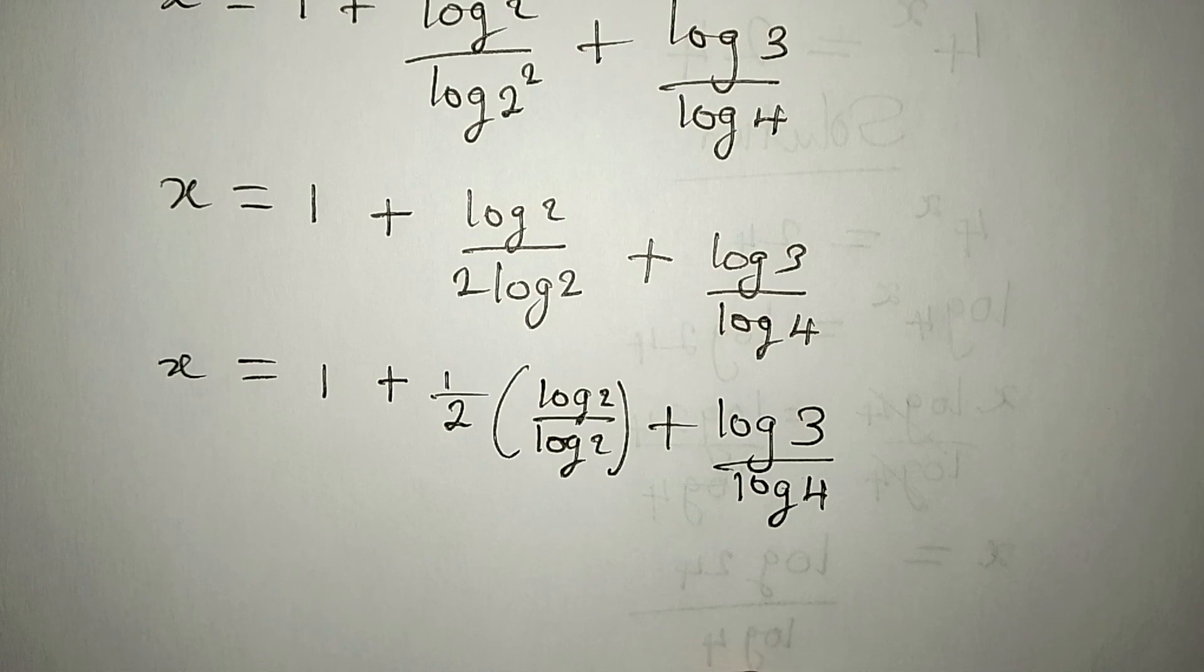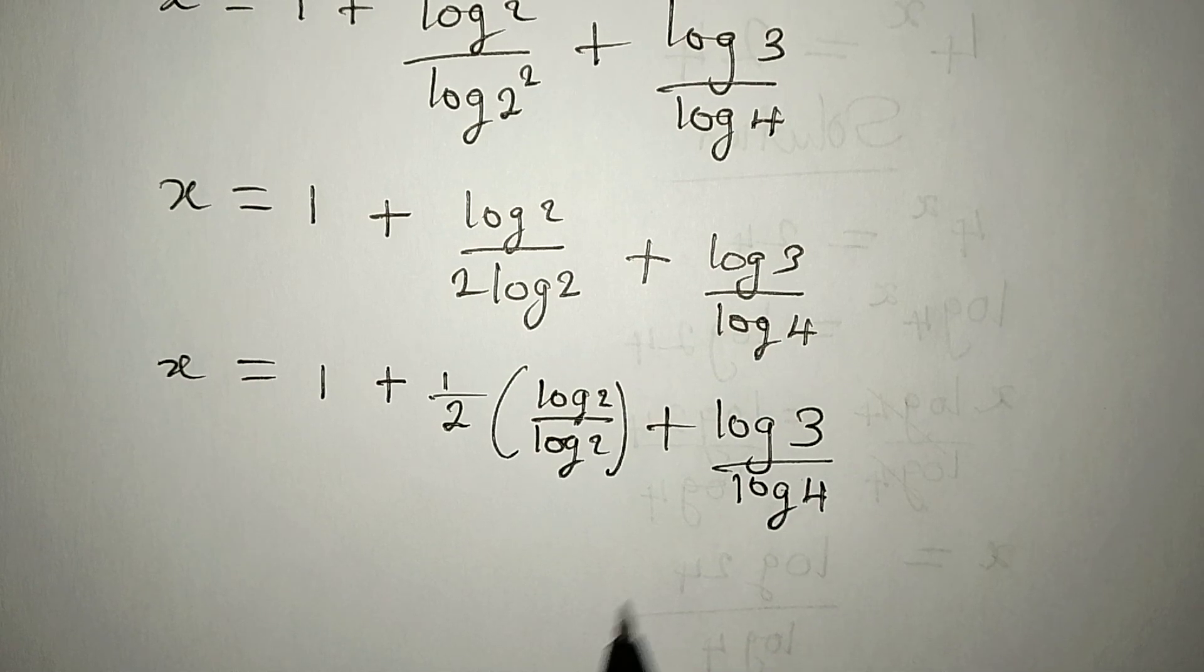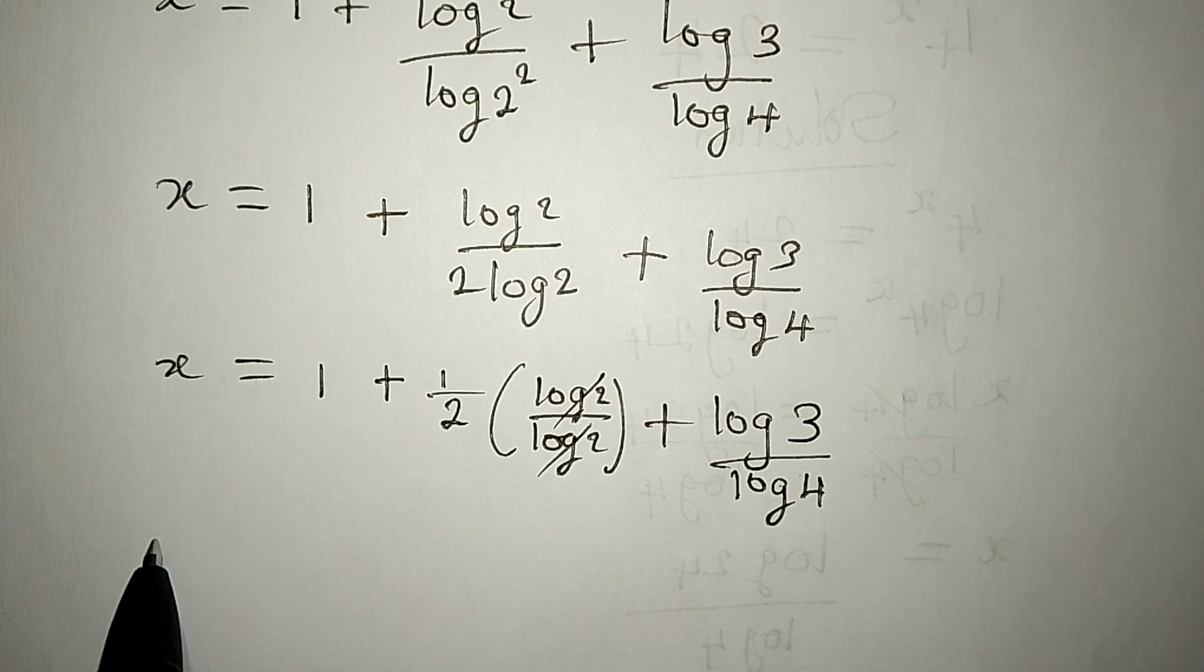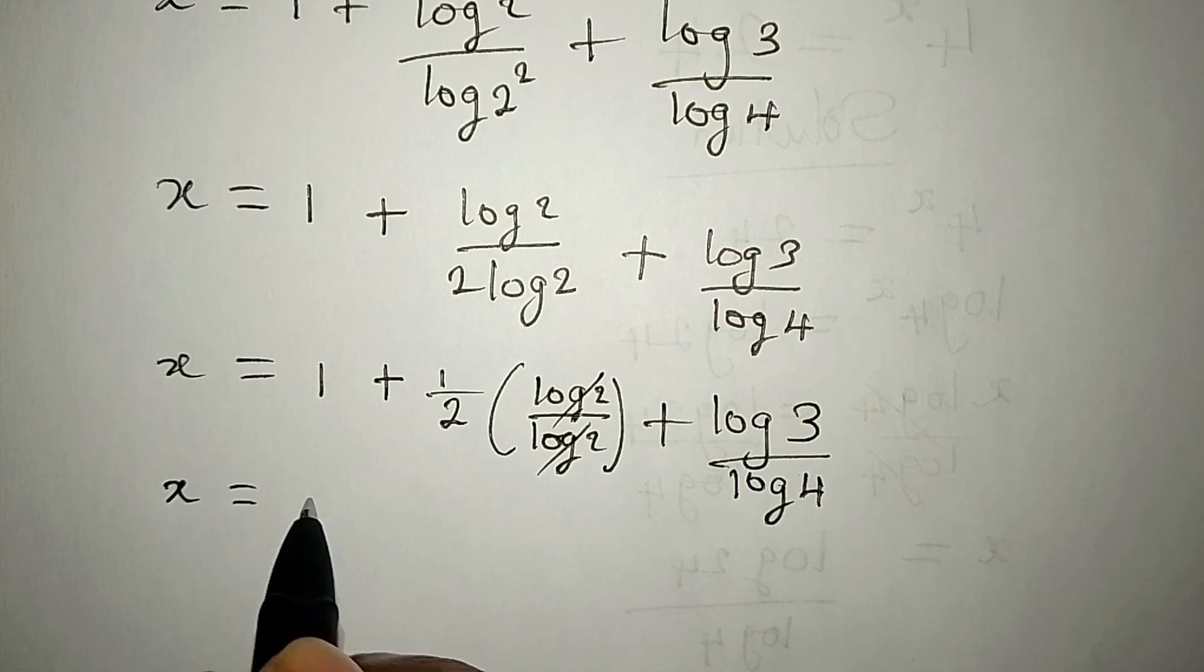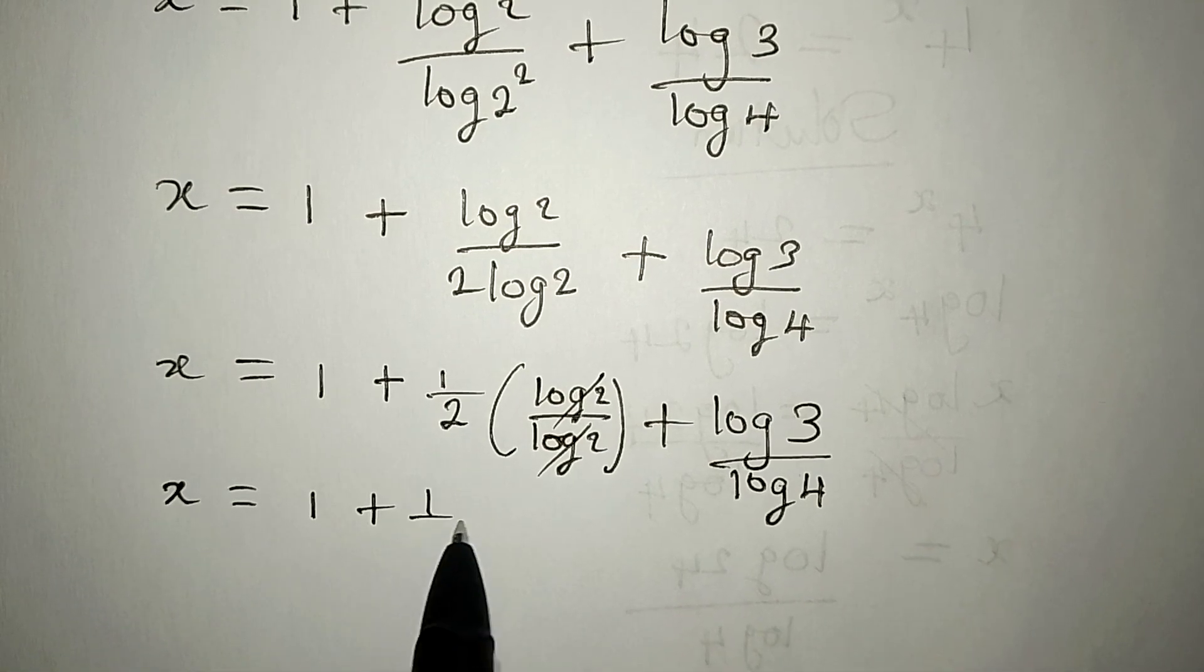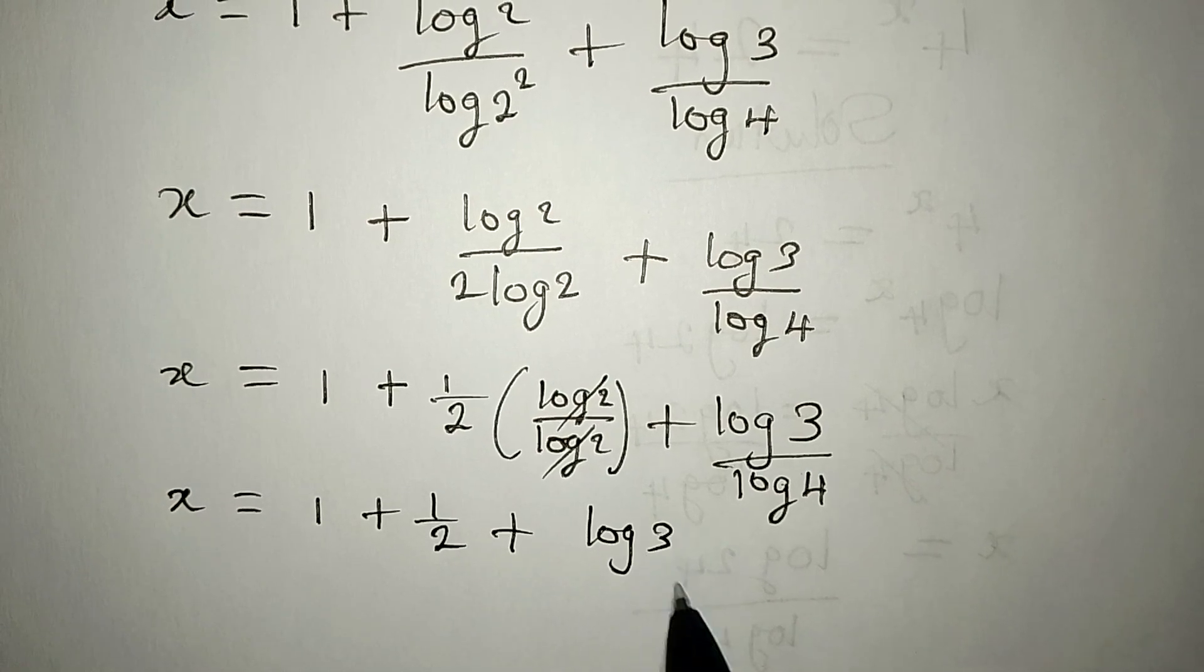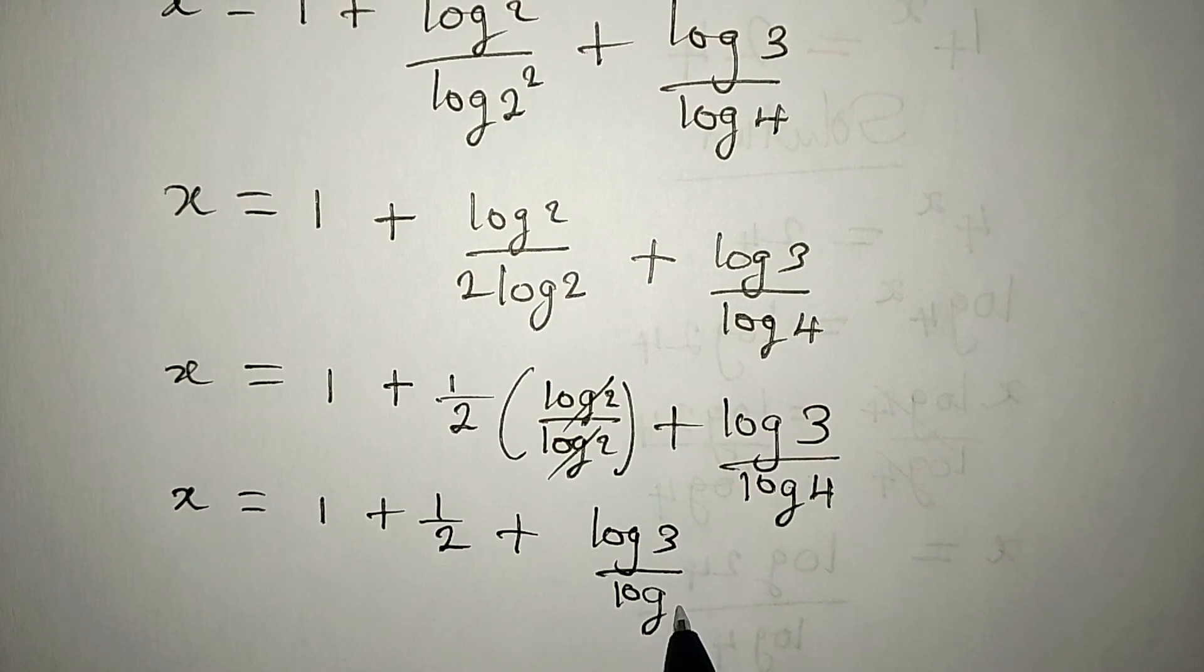This is what we have. And now, this can go with this. We have 1. 1 times 1 over 2 is 1 over 2. So, x is equal to 1 plus 1 over 2 plus log 3 over log 4.